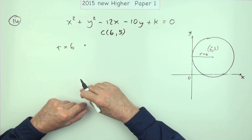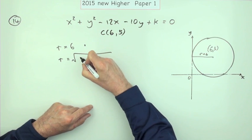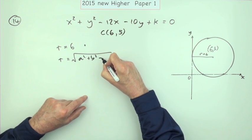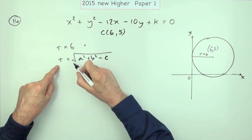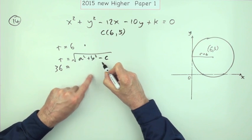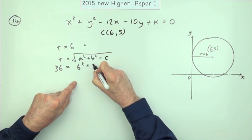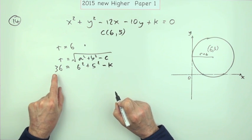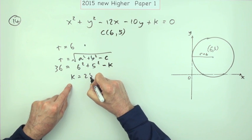The second mark comes from feeding that radius into the formula: the radius is the square root of a² + b² − c. With r = 6, squaring gives 36 = 6² + 5² − k, so 36 = 36 + 25 − k. The 36s cancel, leaving k = 25.